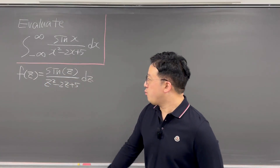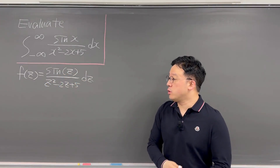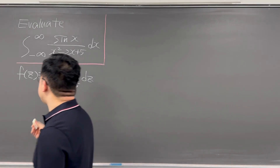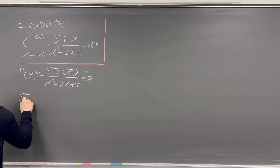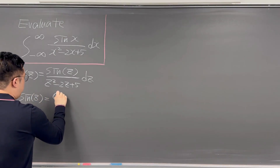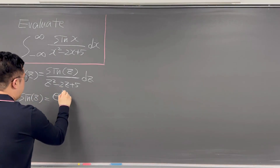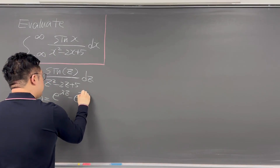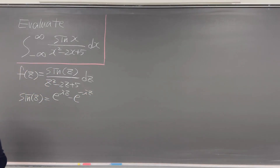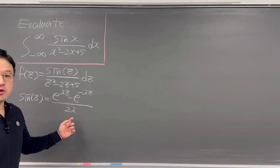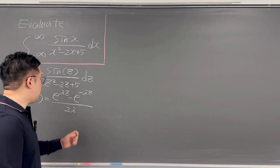In this case, we can rewrite the numerator part because we'll be using complex analysis. So sine(z) has to be equal to (e^(iz) - e^(-iz)) / 2i. This has to be your numerator part using complex analysis.